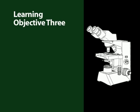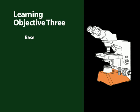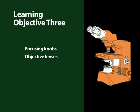The learning objective of this section was to identify and describe the functions of the basic parts of a compound microscope including base, stage, arm, body, coarse and fine focusing knobs, objective lenses which are located on a nosepiece, ocular lenses,